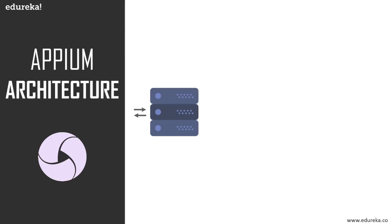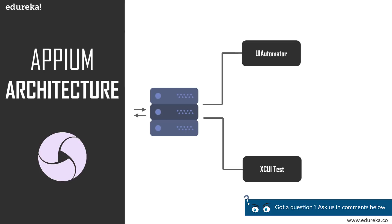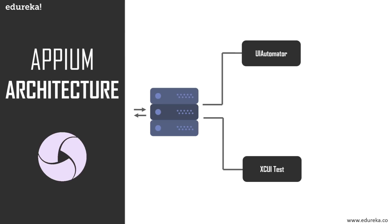If it is an Android request, it will send it to the UI Automator. If it is an iOS request, it will send it to the XCUITest API. These two APIs are UI automation APIs. UI Automator is a framework developed by Android developers used for automating the UI when testing mobile application test cases. XCUITest is a similar framework for Apple, integrated with Xcode, which is the IDE used for writing iOS apps on a MacBook.